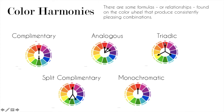Triadic — you can see we have the primary colors as an example. Triadic is any three colors that are equidistant on the color wheel. The primaries are always equidistant: red, then one-two-three spaces to yellow, then one-two-three spaces to blue, and again one-two-three spaces back. So if you rotate this around, any three equidistant colors on the color wheel are triadic. It's a very strong color harmony.